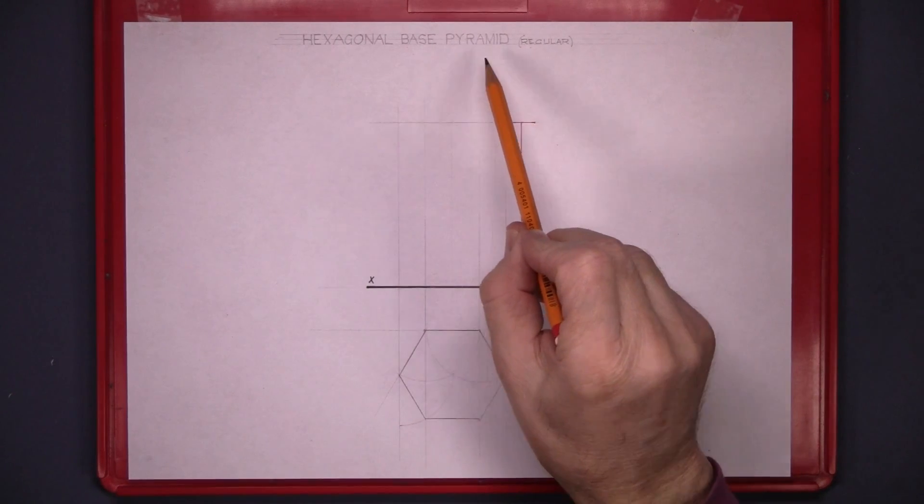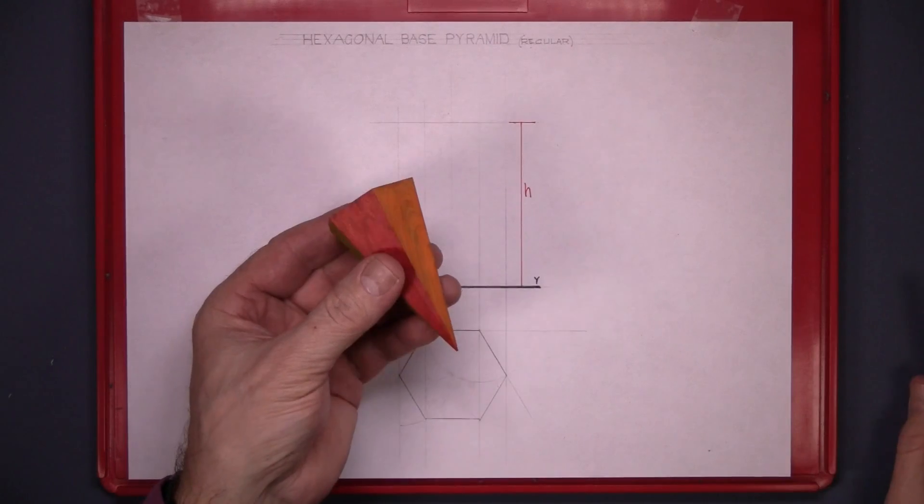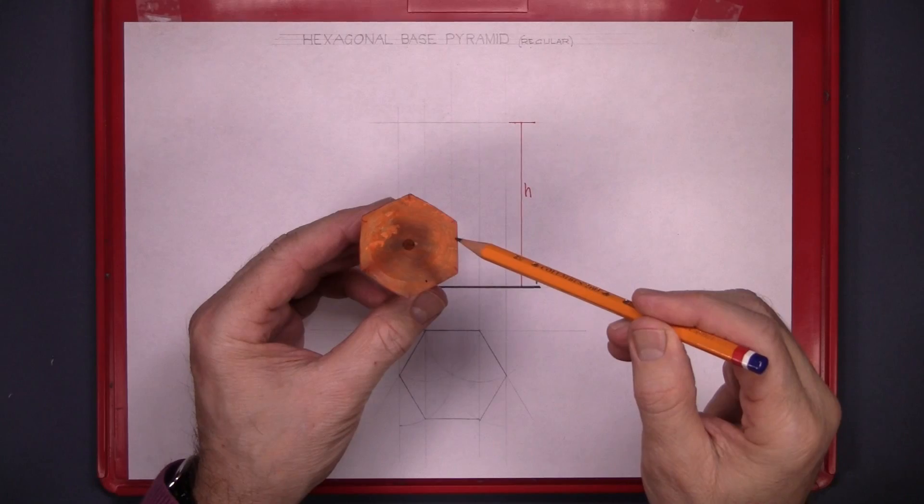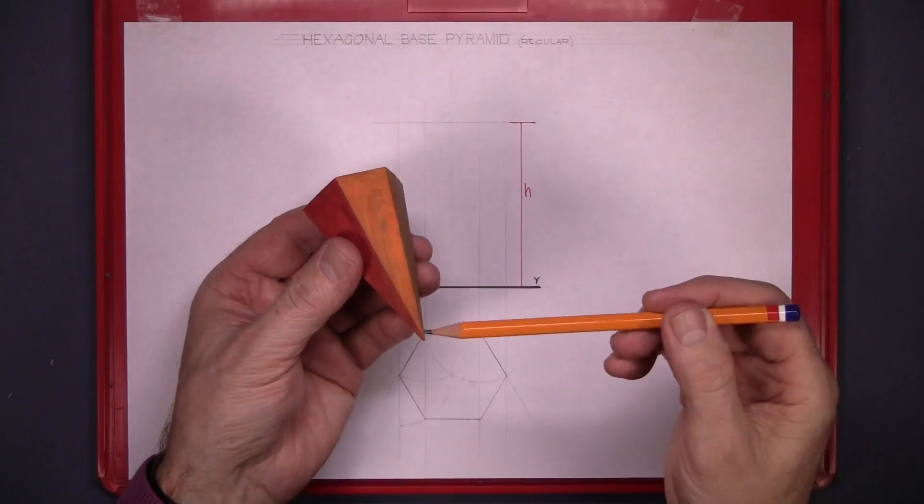Hexagonal base pyramid regular. This is the hexagonal base pyramid. There's six sides on the base and the apex here.